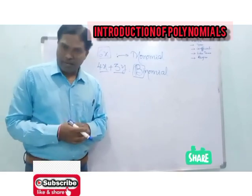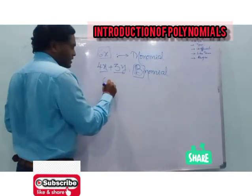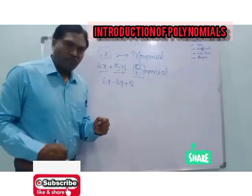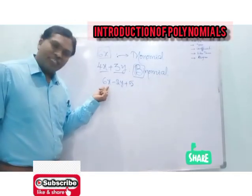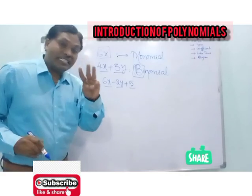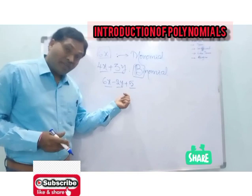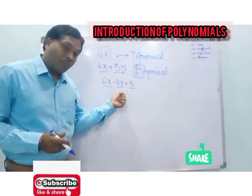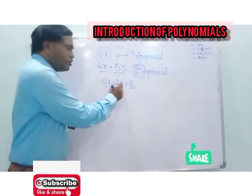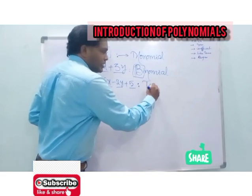And coming to the next one: 6x minus 2y plus 5. Here we have three terms: one, two, three. An expression which consists of three terms is called a trinomial.